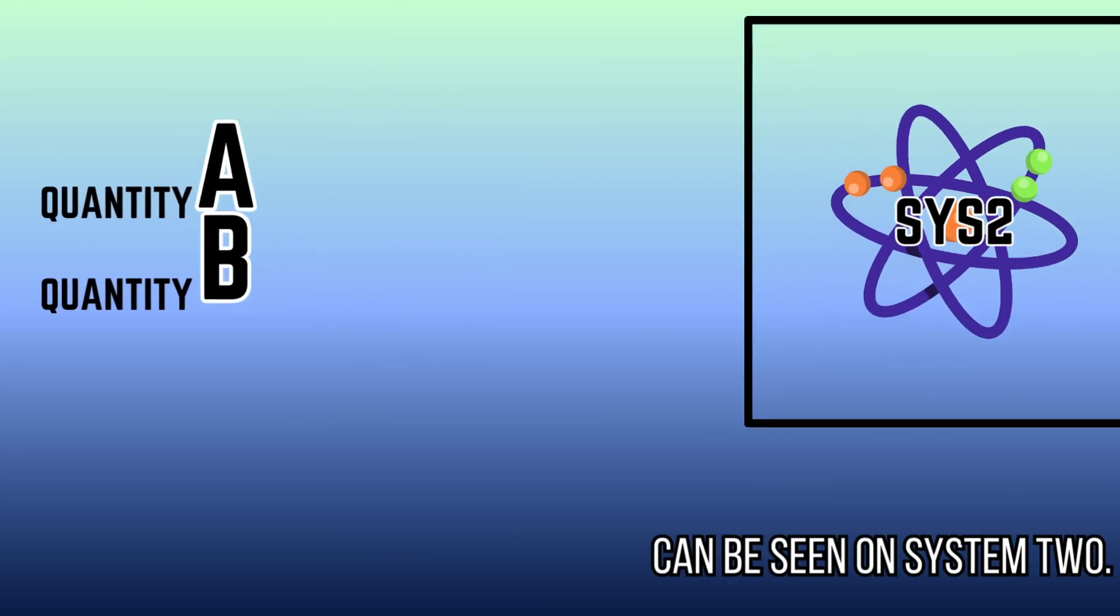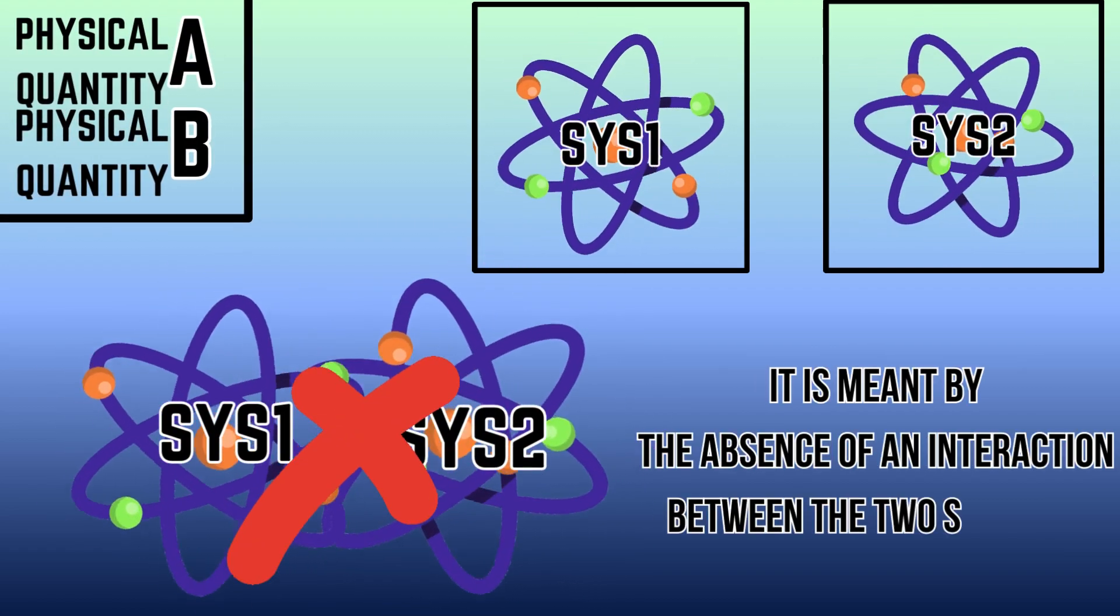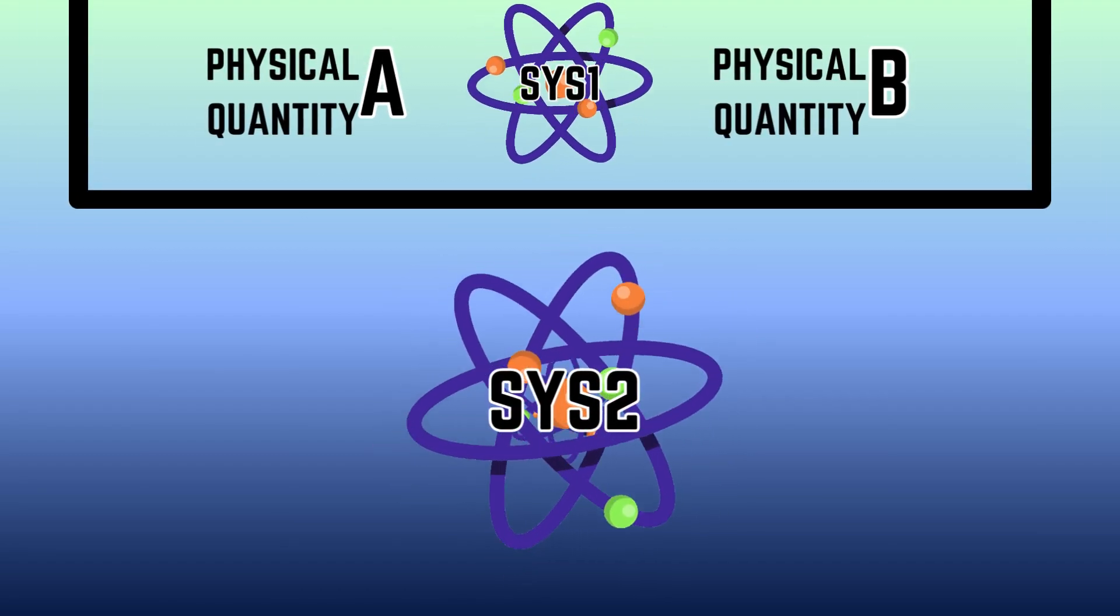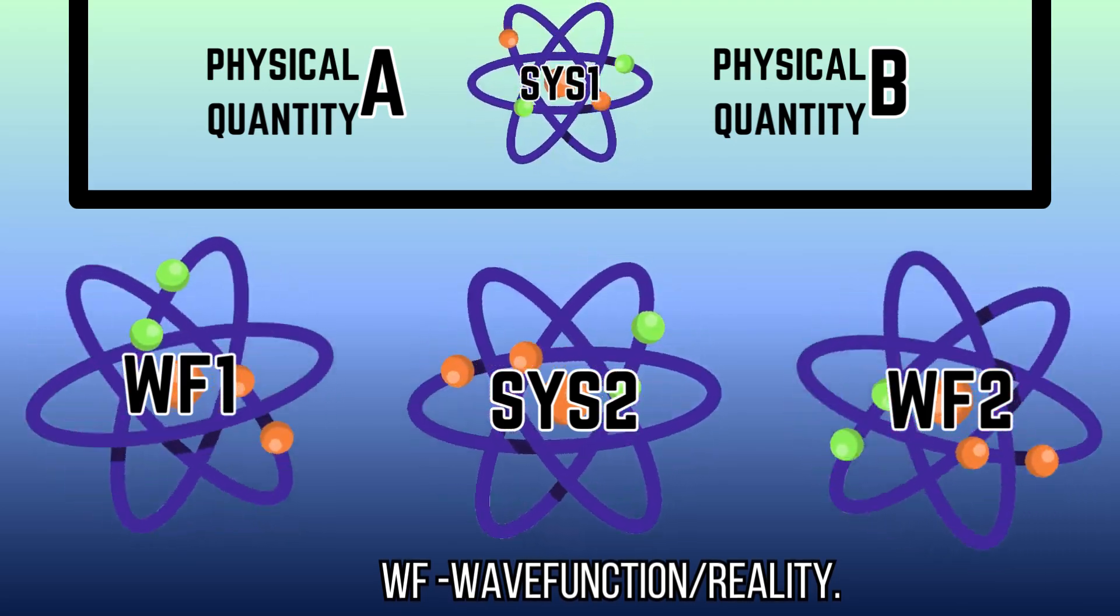That is all of this makes sense to say that it is meant by the absence of an interaction between the two systems. Thus, it is possible to assign two different wave functions to the same reality, meaning having two simultaneous realities.